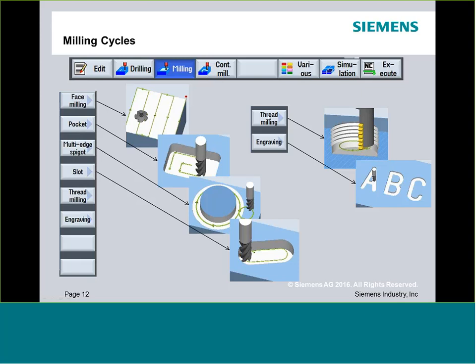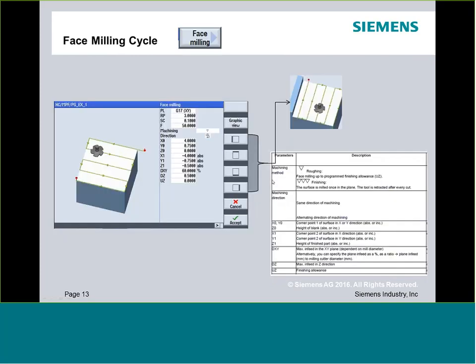We're also going to look at thread milling, which handles internal or external thread mills, and we'll touch upon the engraving cycle. When you enter any cycle, one of the first things to pay attention to is the right vertical soft keys — these are modifiers to control how the cycle works. By selecting them, I can create barriers or inhibit the actual motion of the physical tool — for example, limiting the toolpath around a stop, fixture, or part feature.